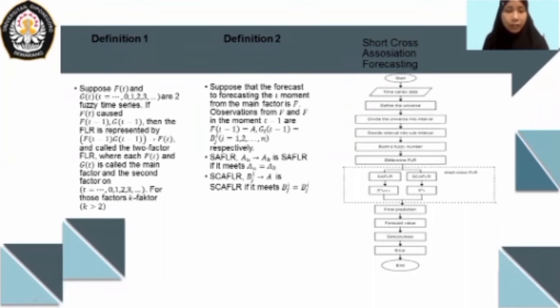As we can see on the screen, Definition 1 and 2. Suppose that F(t) and G(t), as we see on the screen, are both two fuzzy time series. Definition 2 supposes that the forecast for forecasting the moment t from the main factor is F and the second factor is G.